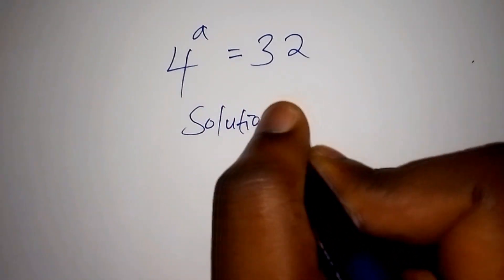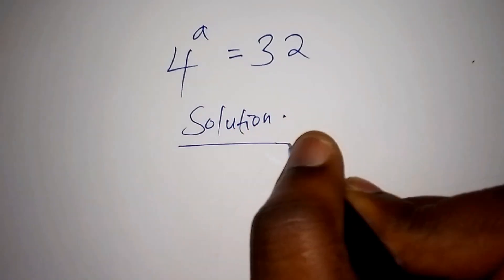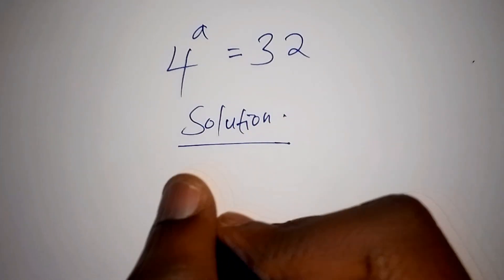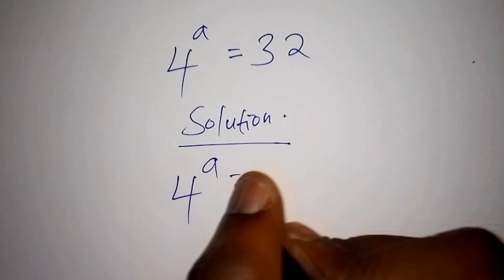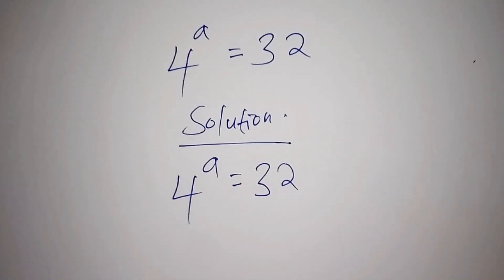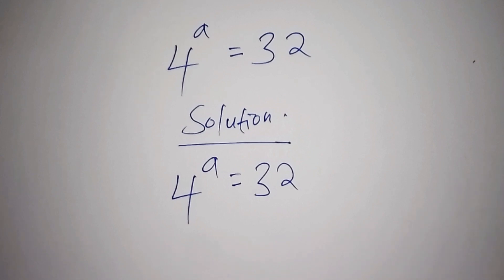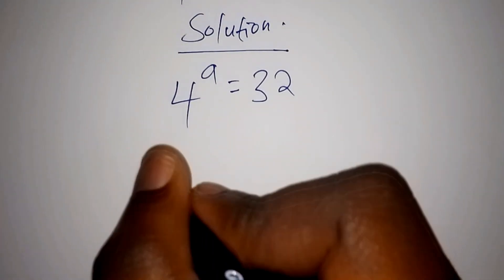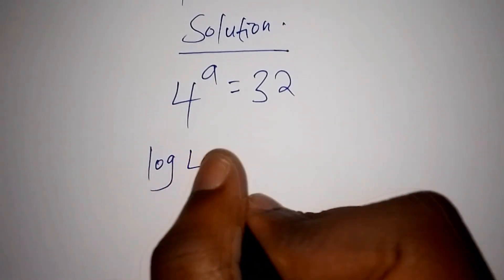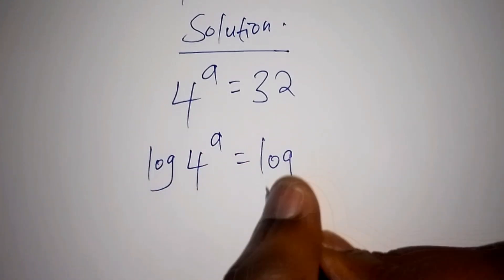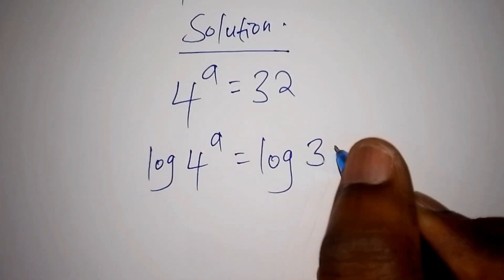Our solution — we are asked to find the value for a. Make sure you watch up to the end. So 4 to the power of a is equals to 32. The best thing you need to do is to introduce the log right now. We shall have the log of 4 to the power of a is equals to the log of 32.